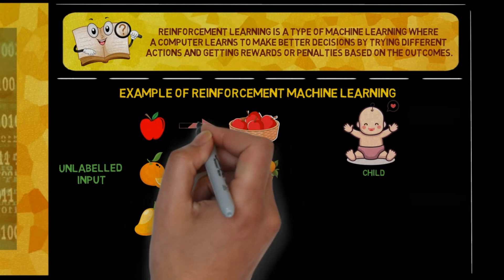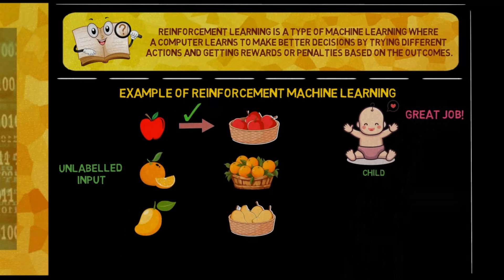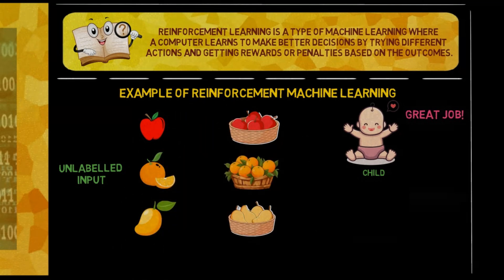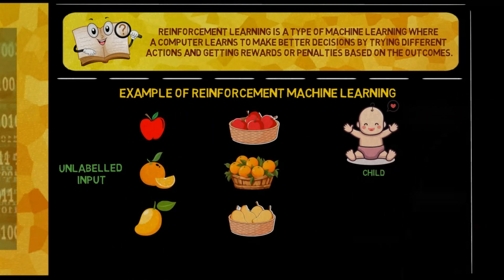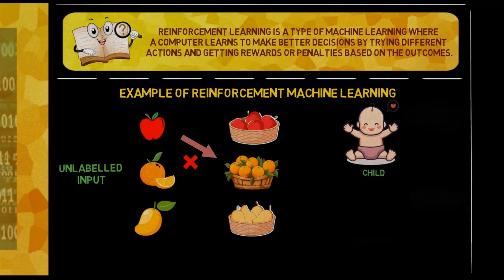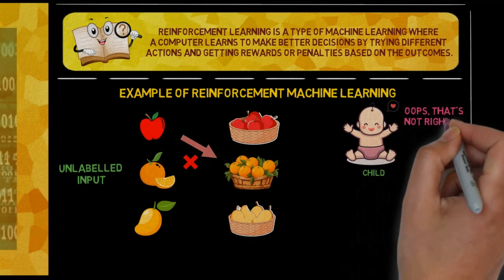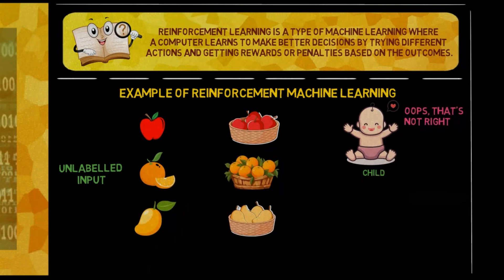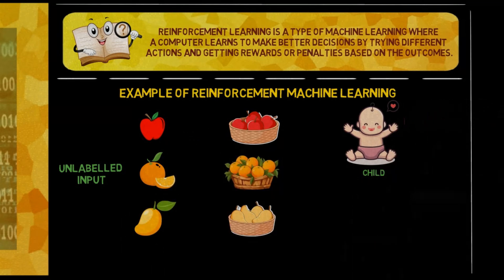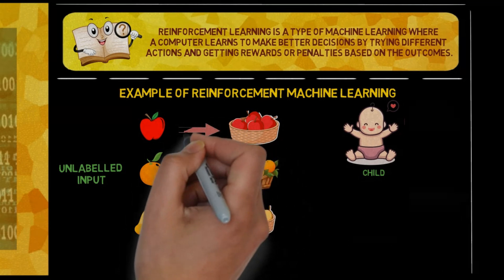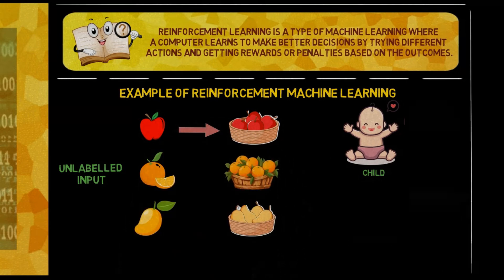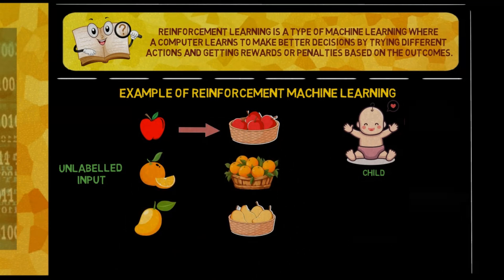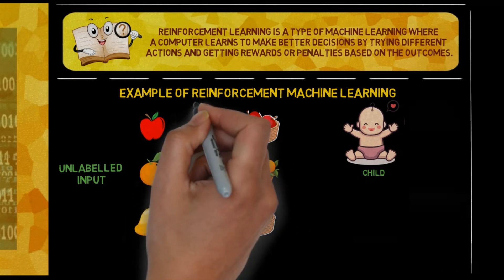If they place an apple in the apple basket, you say, great job! If they place an apple in the orange basket, you gently correct them — oops, that's not right! Over time, the child uses your feedback to understand which actions lead to positive responses.